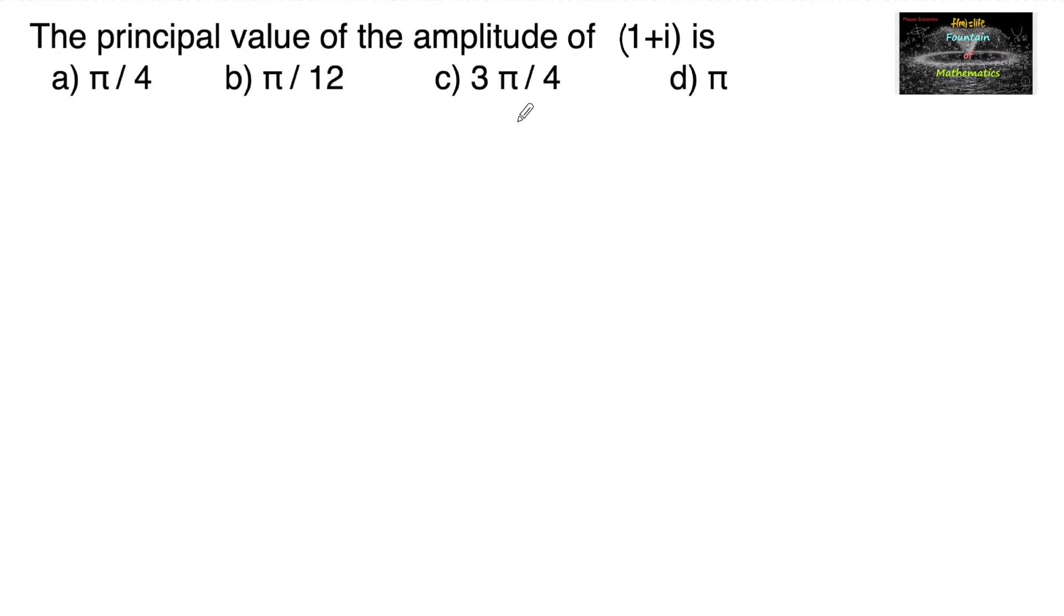The principal value of the amplitude of complex number 1+i. Let us consider z = 1+i. For a complex number z = x + iy when x > 0 and y > 0, both positive, the principal amplitude is θ = tan^(-1)(y/x).